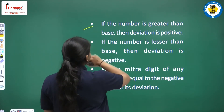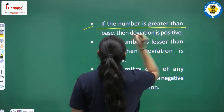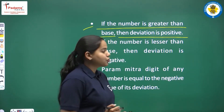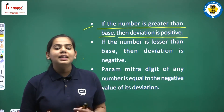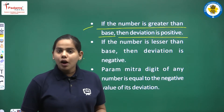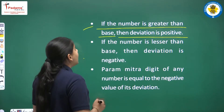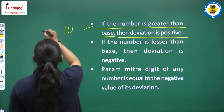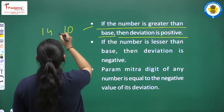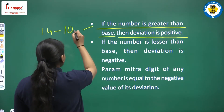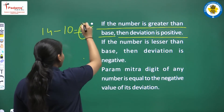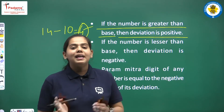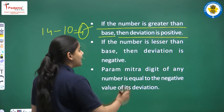If the number is greater than the base, then deviation is positive. For example, if we take base as 10 and the number is 14, then 14 minus 10 gives us plus 4. So 4 is a positive number because the number here is greater than the base. If the number is lesser than the base, then deviation is negative. For example, base is 10 and the number is 6, so 6 minus 10 gives us minus 4, which is a negative deviation.